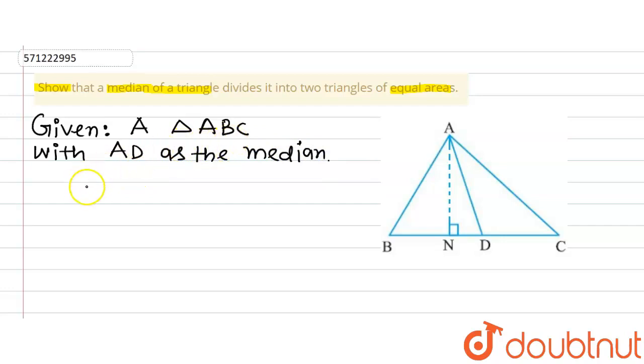Now, AD is the median. We know that if AD is the median, it will bisect BC into two equal parts. That means BD equals CD equals half of BC. This is what AD being the median means. Let's name this equation 1; we will use it later.